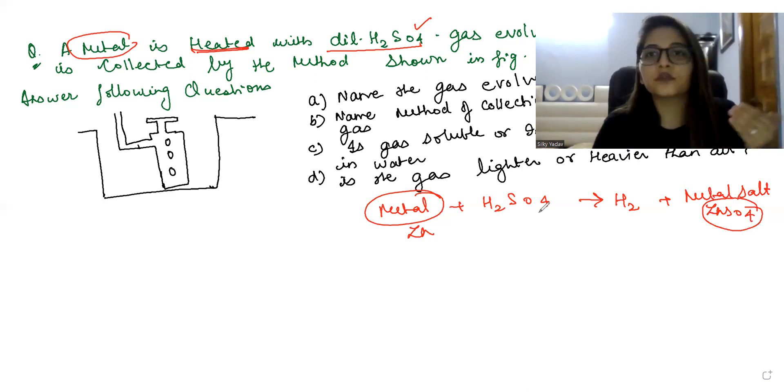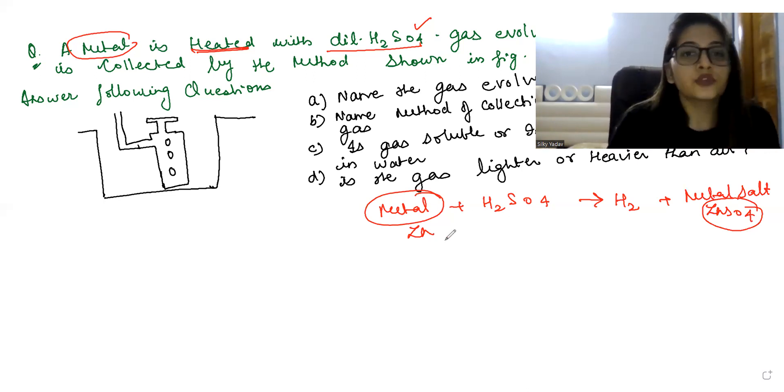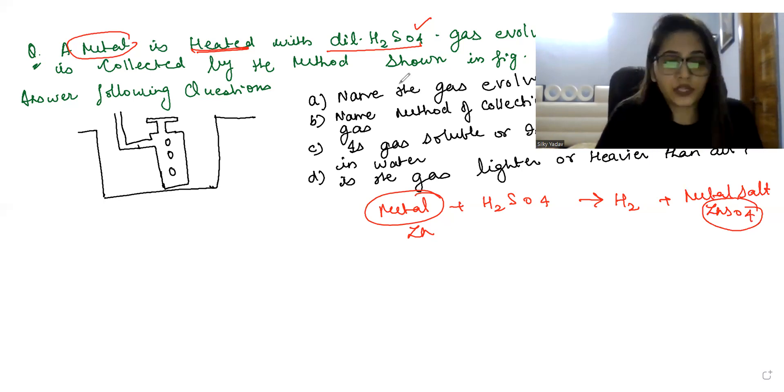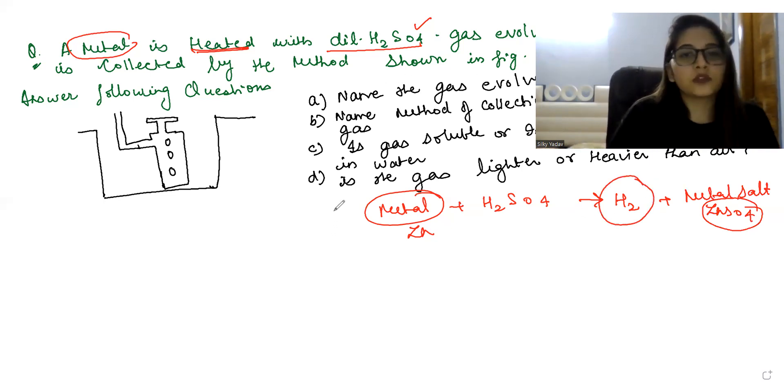So now zinc is going to react to form ZnSO4 and H2, and this is the gas we are going to get. So I think with this our first part is already answered. Name the gas evolved - the gas evolved is hydrogen gas.